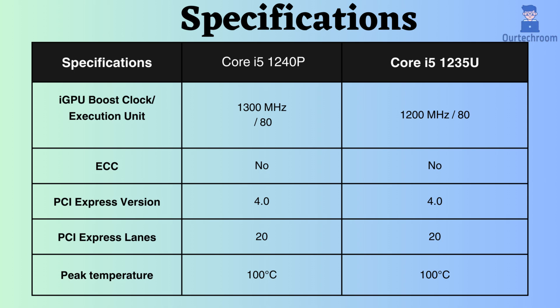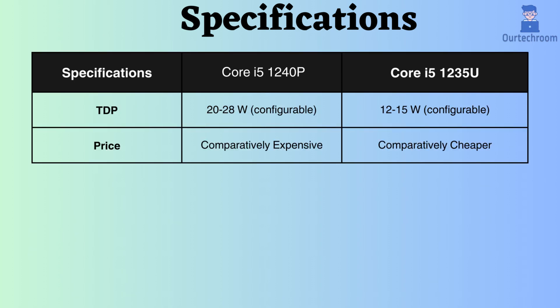The TDP for the Core i5-1240p is configurable and falls between 20-28W, whereas for the Core i5-1235u it ranges between 12-15W. With a lower TDP value, the Core i5-1235u exhibits better power consumption efficiency.